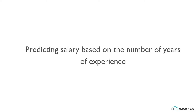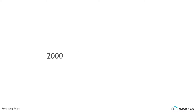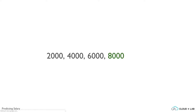Let's take a really simple example of predicting the salary based on the number of years of experience. After the first year, your salary was 2000. After the second year, your salary became 4000. And the third year, 6000. What will be your salary in the fourth year? That's right — it is 8000.